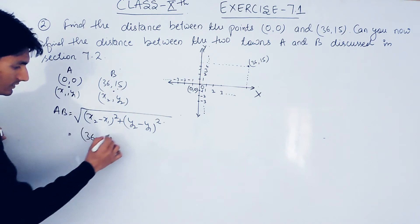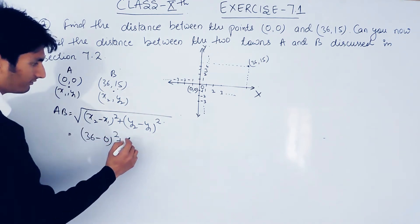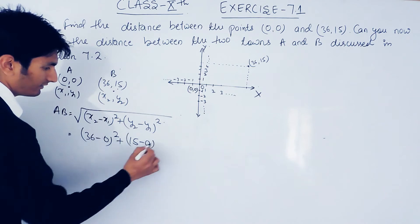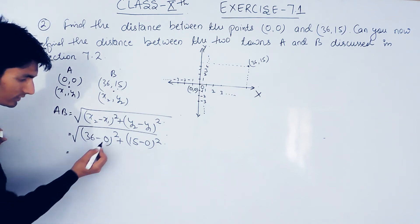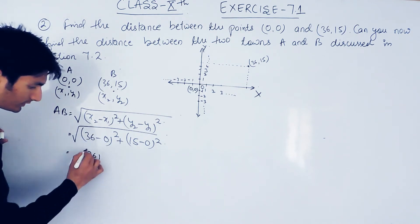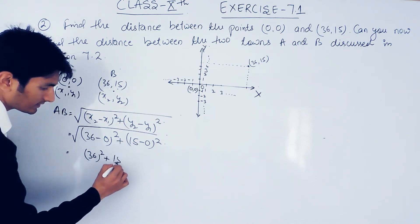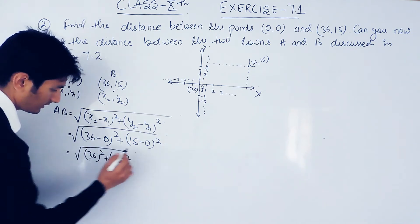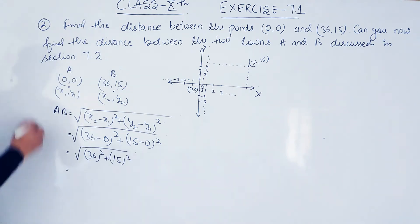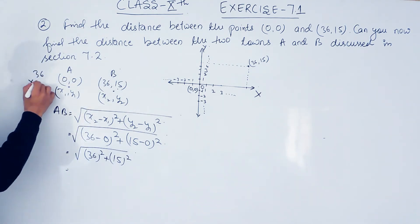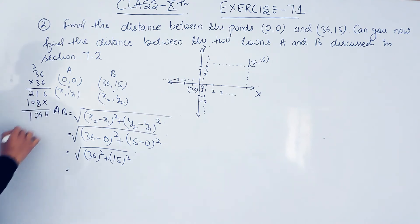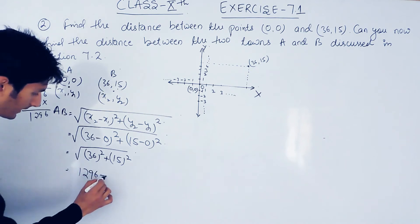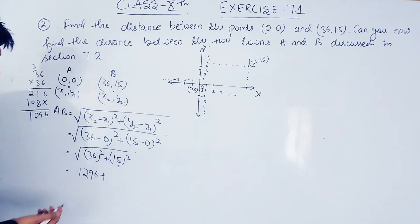Our x2 is 36, x1 is 0, y2 is 15, and y1 is 0. So further solving: 36 minus 0 is 36, so it is 36 squared, and 15 minus 0 gives 15 squared. The square of 36 is 1296, and the square of 15 is 225.